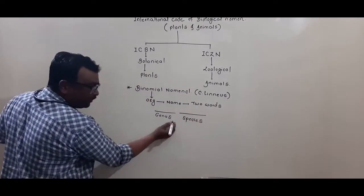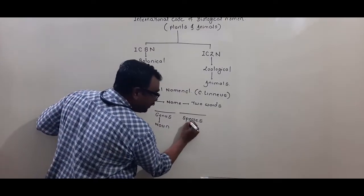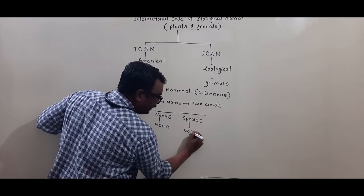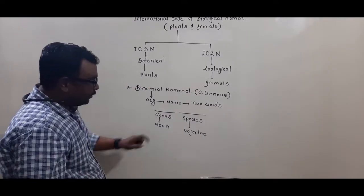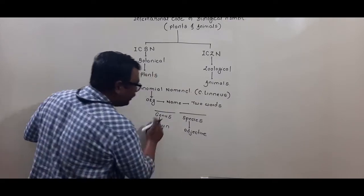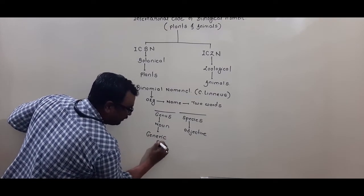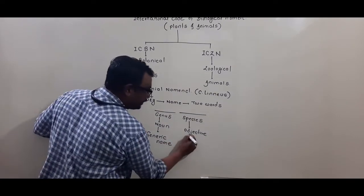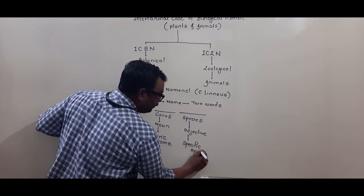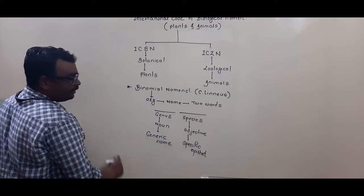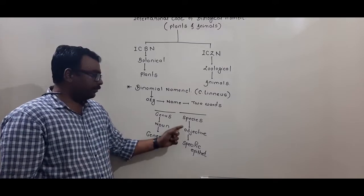The genus is considered a noun in English, while the species is considered an adjective. For example, the human name is Homo sapiens — 'Homo' means man (noun) and 'sapiens' means more intelligent (adjective). The first word representing the genus is called the generic name, and the species word, being an adjective, is called the specific epithet.